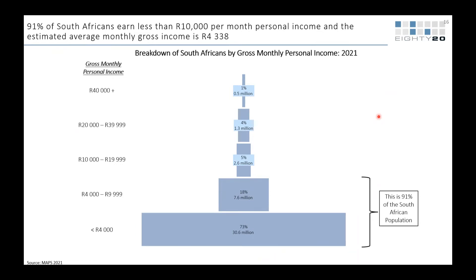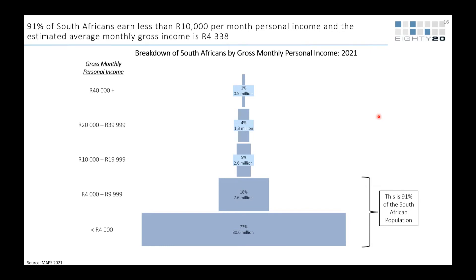What it all comes down to is that each respondent represents a larger number of people — the population number is still set to what the census found. They've just over-weighted the areas that have more income and revenue, but that doesn't give you an incorrect population number.